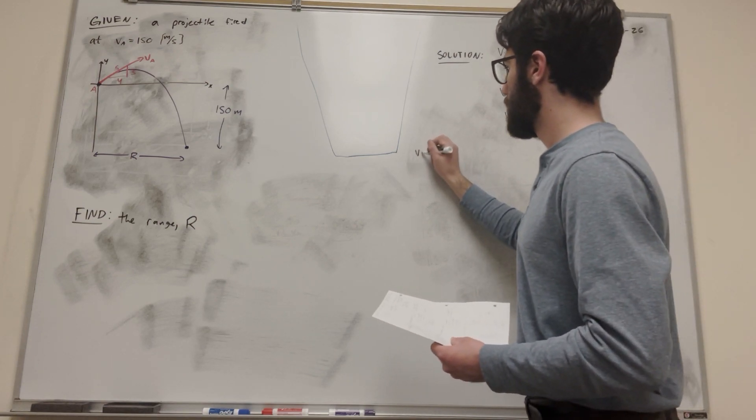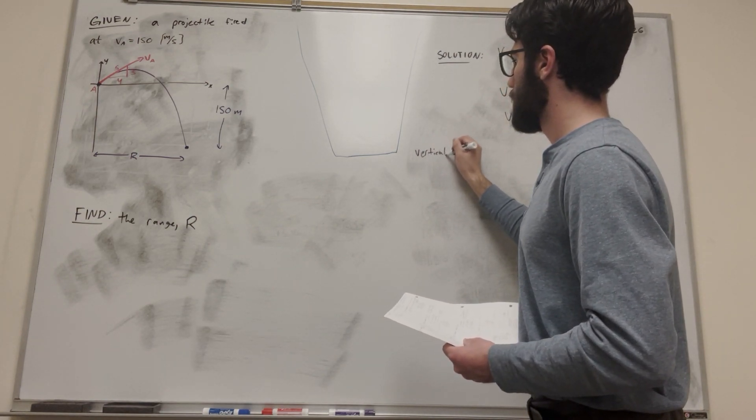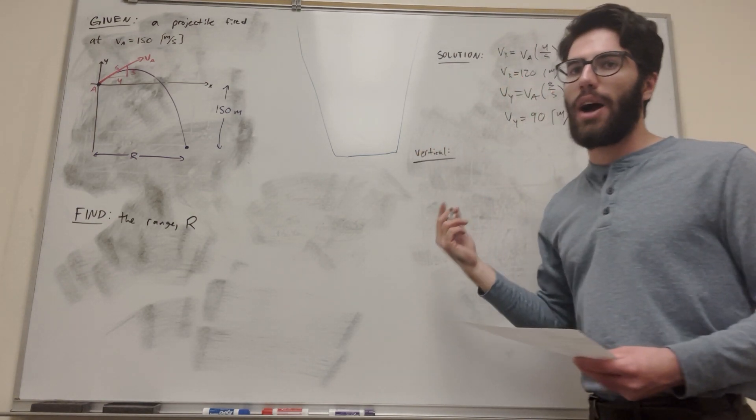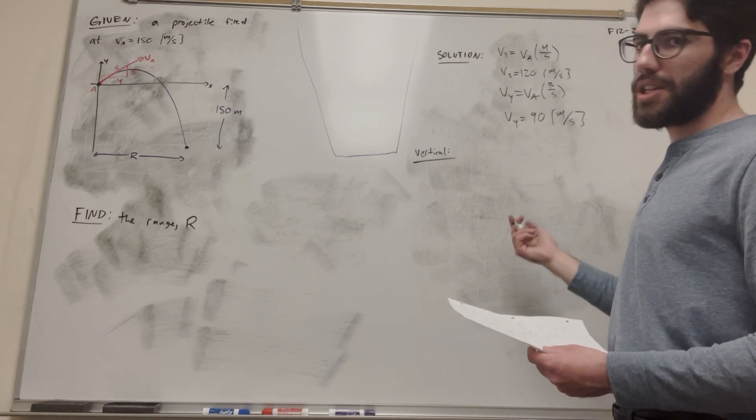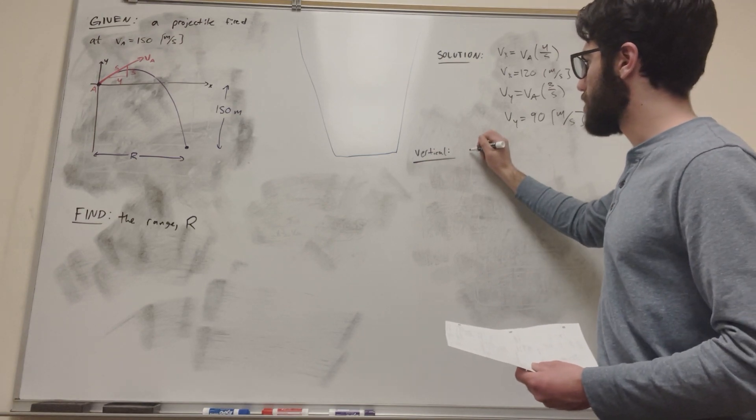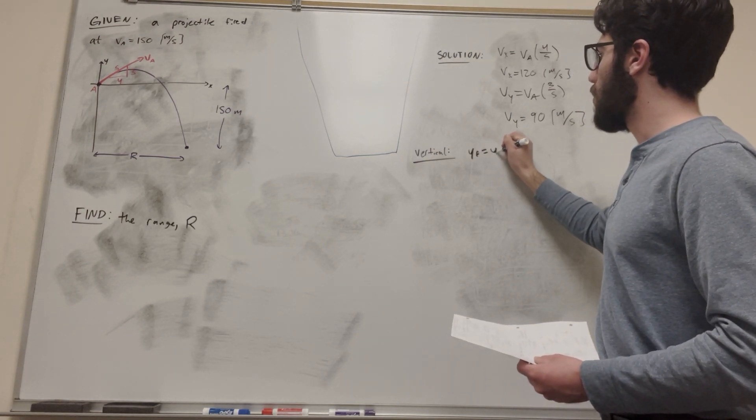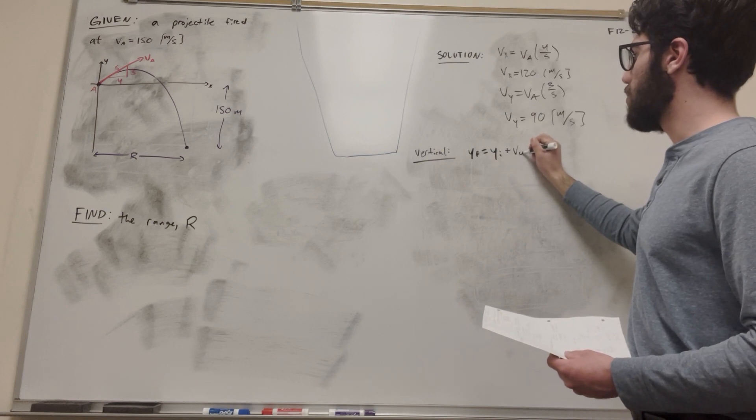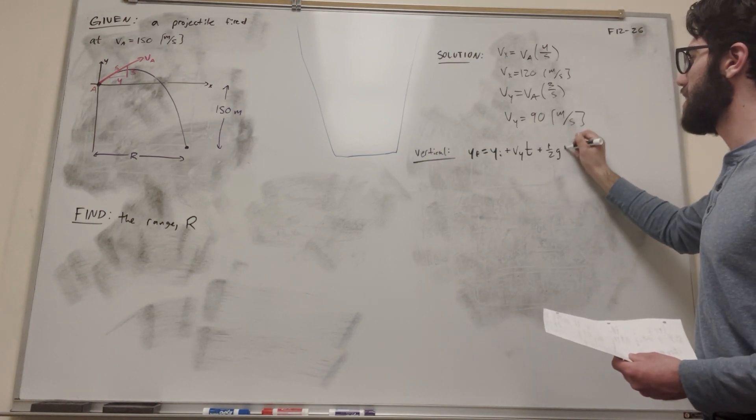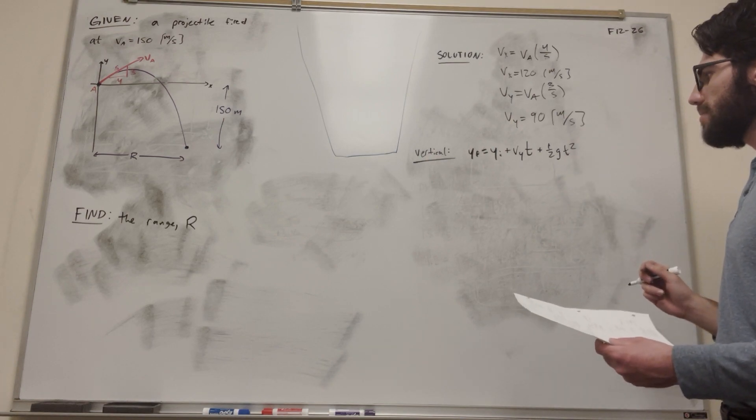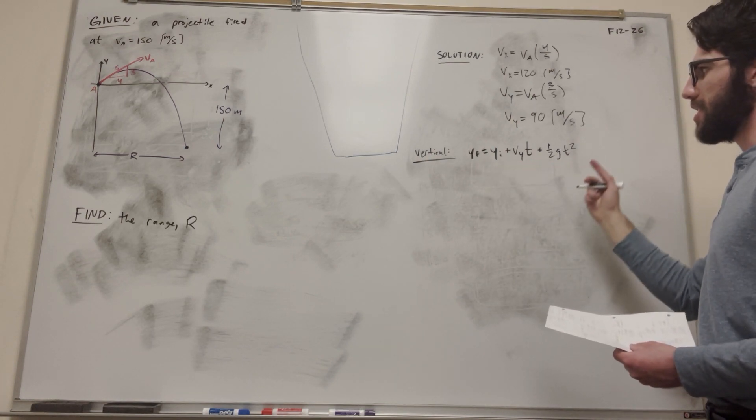So let's start with vertical. We're going to try to see how long it takes to hit the ground. So let's start with that. So we're going to use a kinematics equation. Let's start with this one. y final is equal to y initial plus velocity y time plus 1 half gravity time squared.